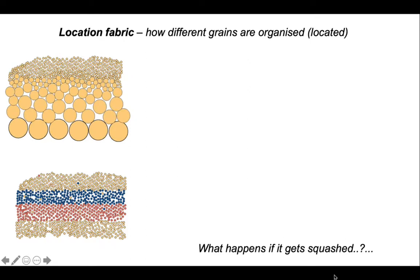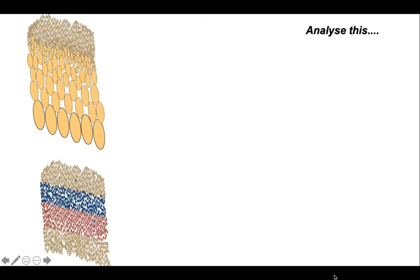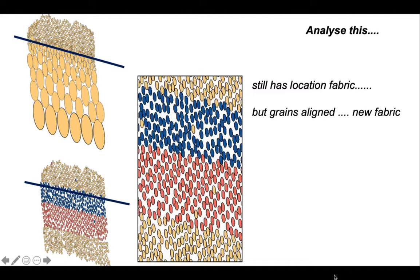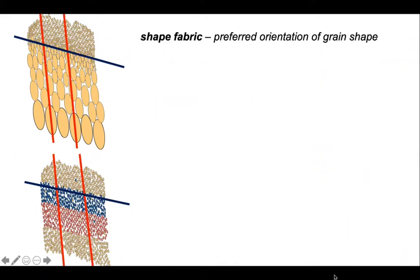So now we can ask what happens if it gets squashed. You can still see the location fabric defined by composition or grain size variations, but if we look closely we can see that the grains are aligned. They have an elliptical shape where the long axes line up, and this defines a new fabric — aligned along the red line there — and we can recognise that in both situations.